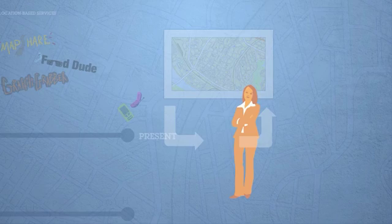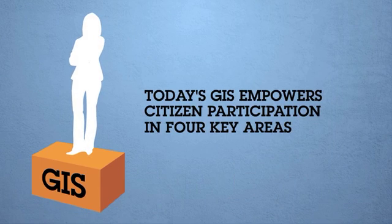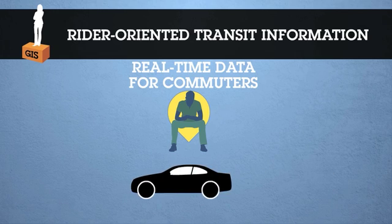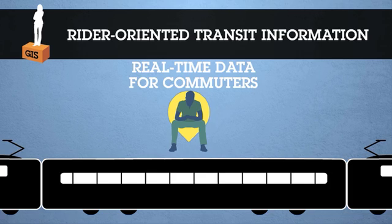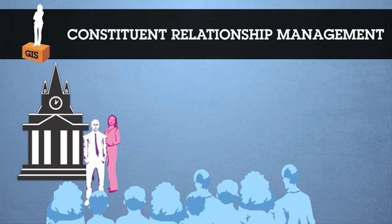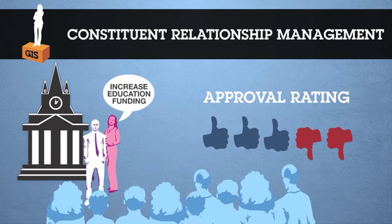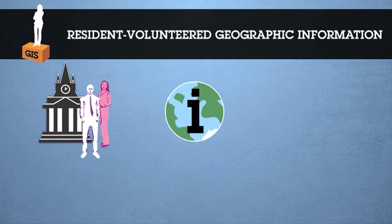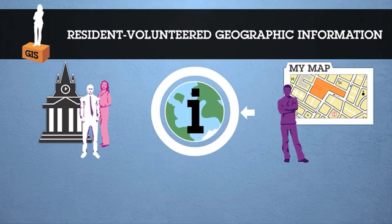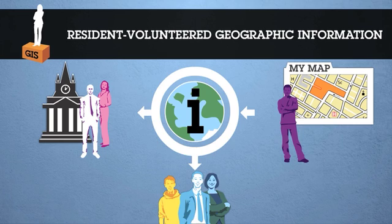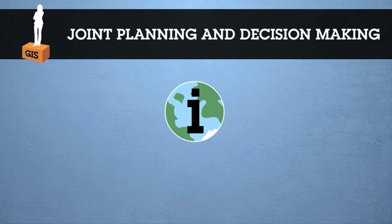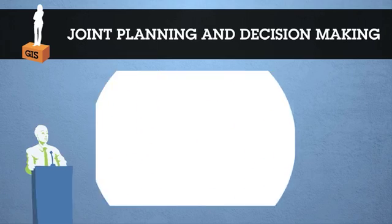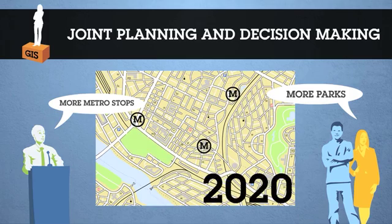Now the third wave of GIS is here, which leverages the two-way dynamic content of web 2.0. Today's GIS empowers citizen participation in four key areas: rider-oriented transit information provides real-time data for commuters whether they travel by car, bus, or train; constituent relationship management enables government executives and program managers to conduct up-to-the-minute assessment of their performance so that residents enjoy a more responsive government; resident volunteer geographic information allows residents to generate and share geographical information with government officials and other citizens quickly over the internet; and lastly, joint planning and decision making, which promises greater collaboration between government planners and the communities they serve in shaping the city's growth and prioritizing projects and services.